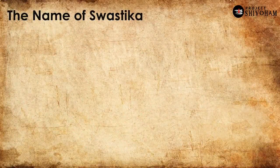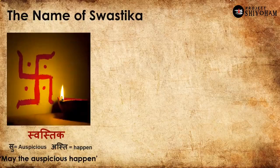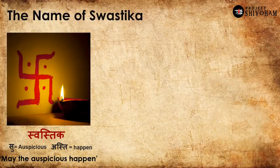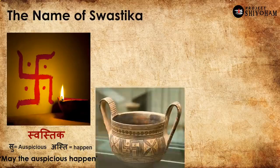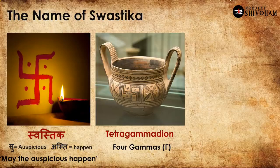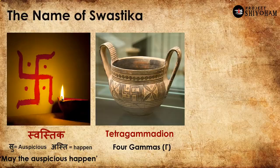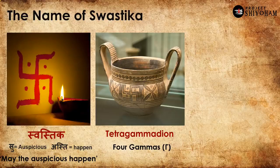Let us start with the easiest one — the name of Swastika. What does it convey? Swastika is a sandhi of two words in Sanskrit: 'Su' and 'asti.' Su means auspicious, and asti means 'may it happen.' So the word Swastika means 'may the auspicious happen' — it is a kind of a blessing. Now let us see how Swastika was called in the Greek civilization, the cradle of Western civilization. The Greeks called it Tetra Gammadeon — Tetra meaning four, and Gammadeon meaning 'the one made with four Gammas,' where Gamma is the third Greek alphabet. So Swastika in Greek is a shape which has four Gammas.